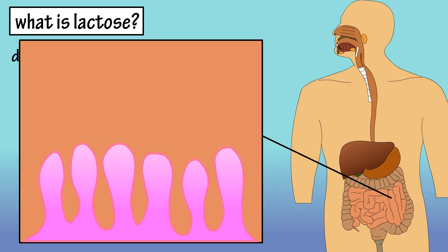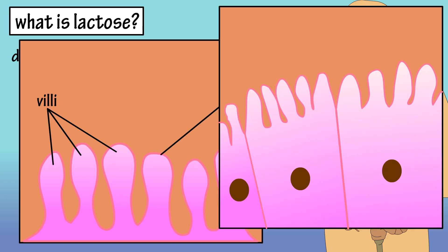In the small intestine, there are tiny finger-like projections called villi. These villi consist of hundreds of intestinal cells called entrocytes, which are covered with projections called microvilli.